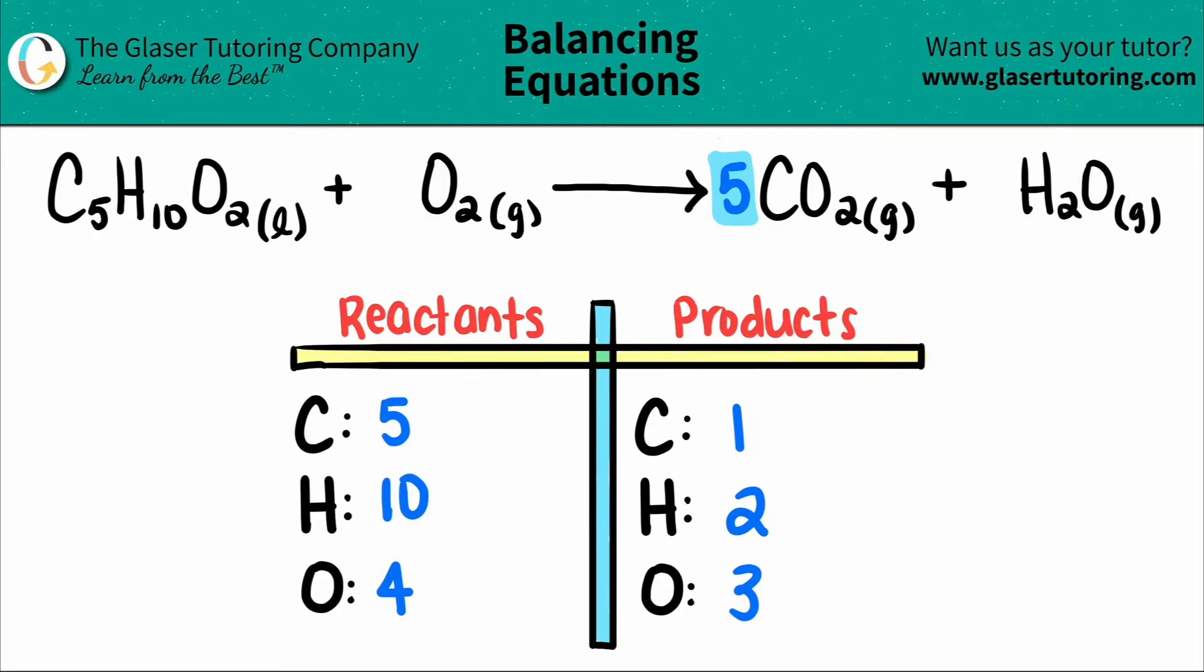But you got to be fair. Whatever number you put in front gets distributed to all of the elements in that compound. So I have five carbons, but now look at the total oxygens. There's oxygen here and here on the product side. Five times two is 10 plus one lonely oxygen here, so five times two is 10 plus one is a total of 11 oxygens. The carbons are balanced.